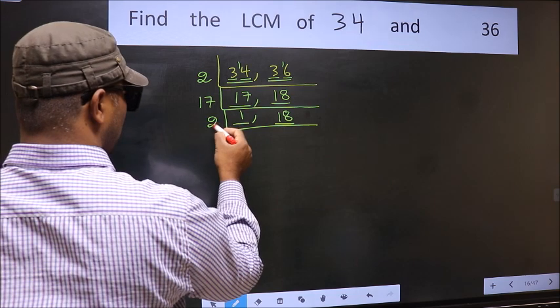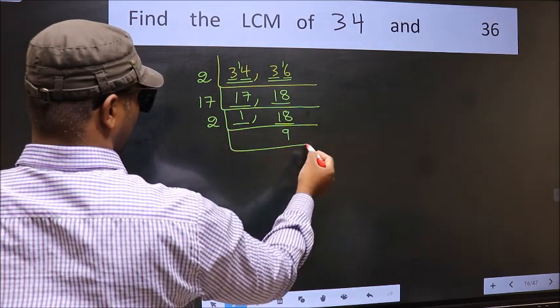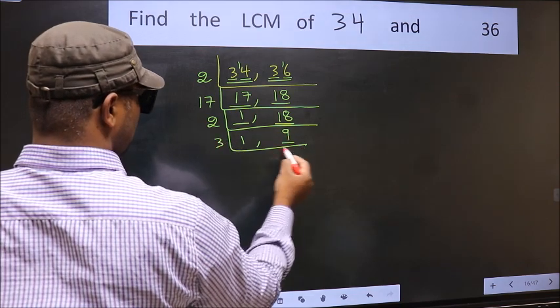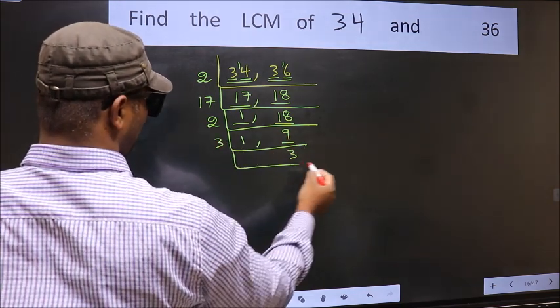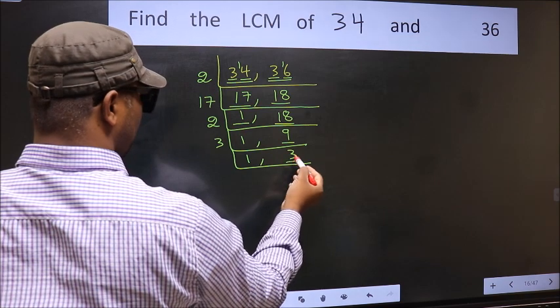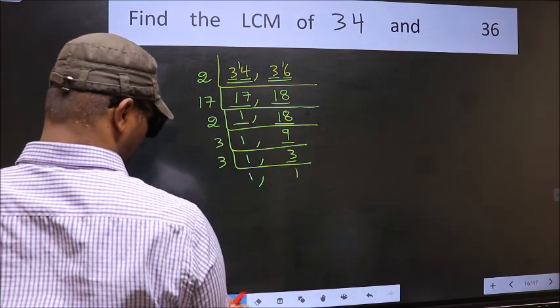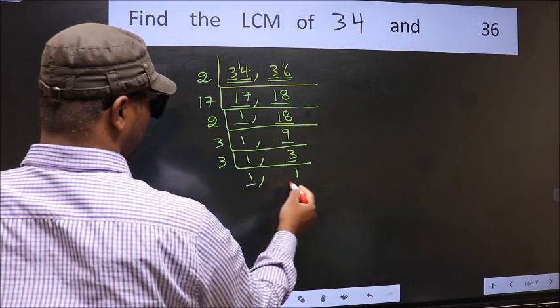18 is 2, 9, 18. Now we have 9, 9 is 3, 3 is 9. Now we have 3, 3 is a prime number, so 3, 1 is 3. So we got 1 in both the places.